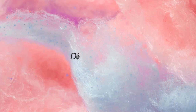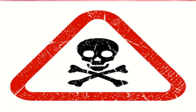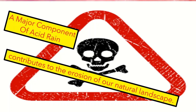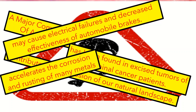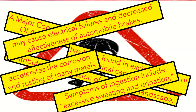The chemical was known as DHMO, or dihydrogen monoxide. In his experiment, he showed some really true facts about this chemical: it is a major component of acid rain, it contributes to erosion of our natural landscape, it has been found in excised tumors of terminal cancer patients, it may cause electrical failures and decrease the effectiveness of automobile brakes, and it accelerates the corrosion and rusting of many metals.